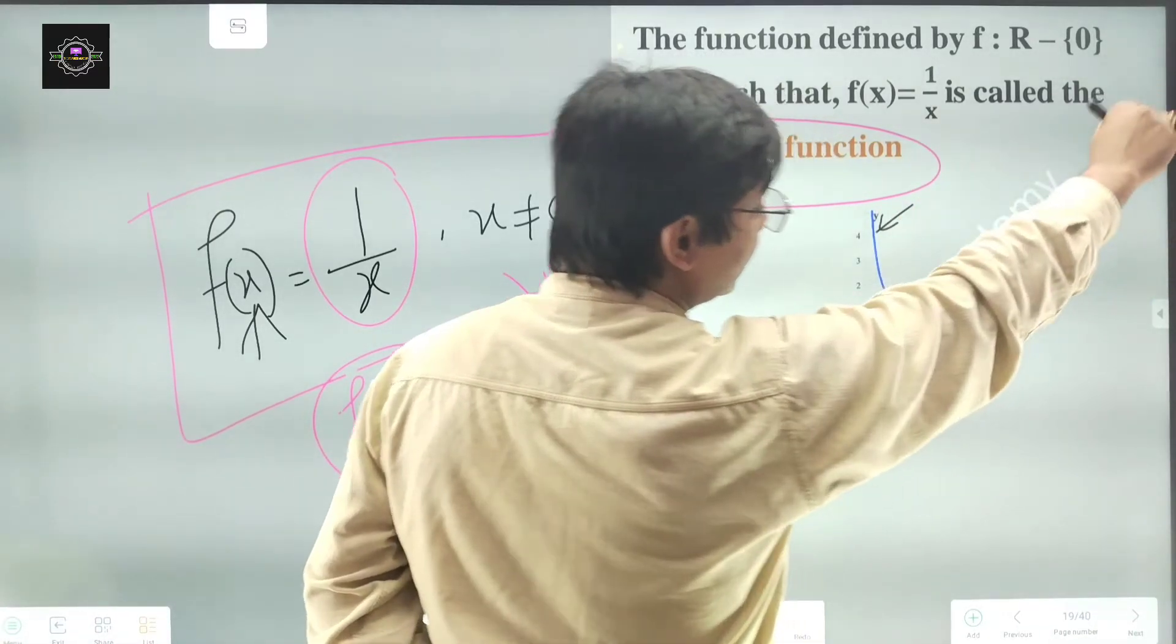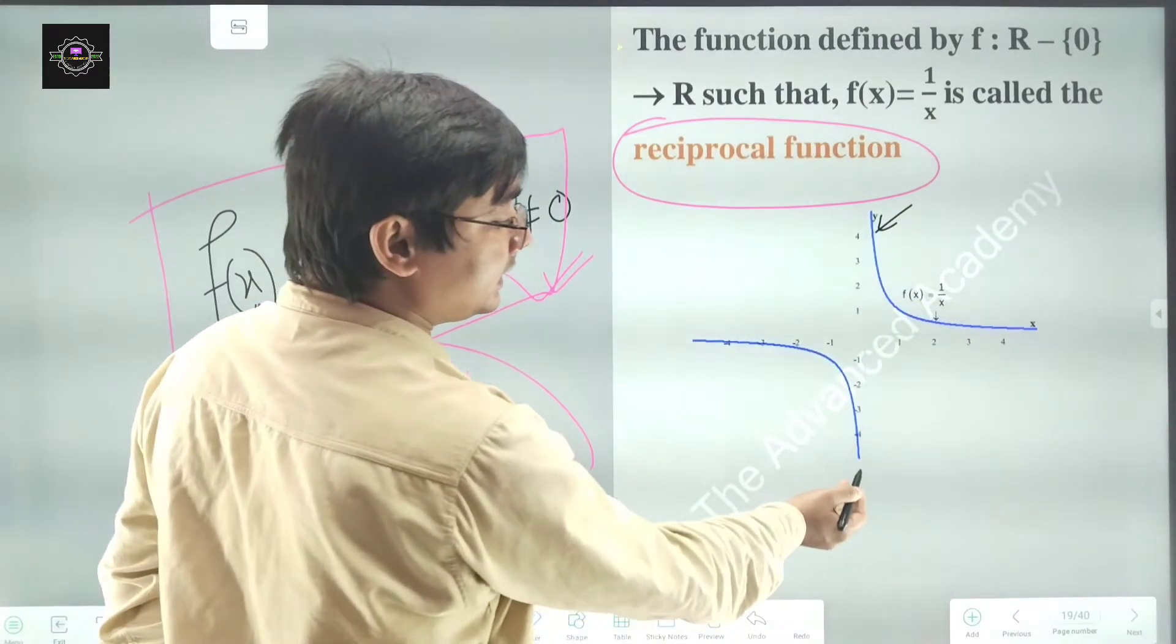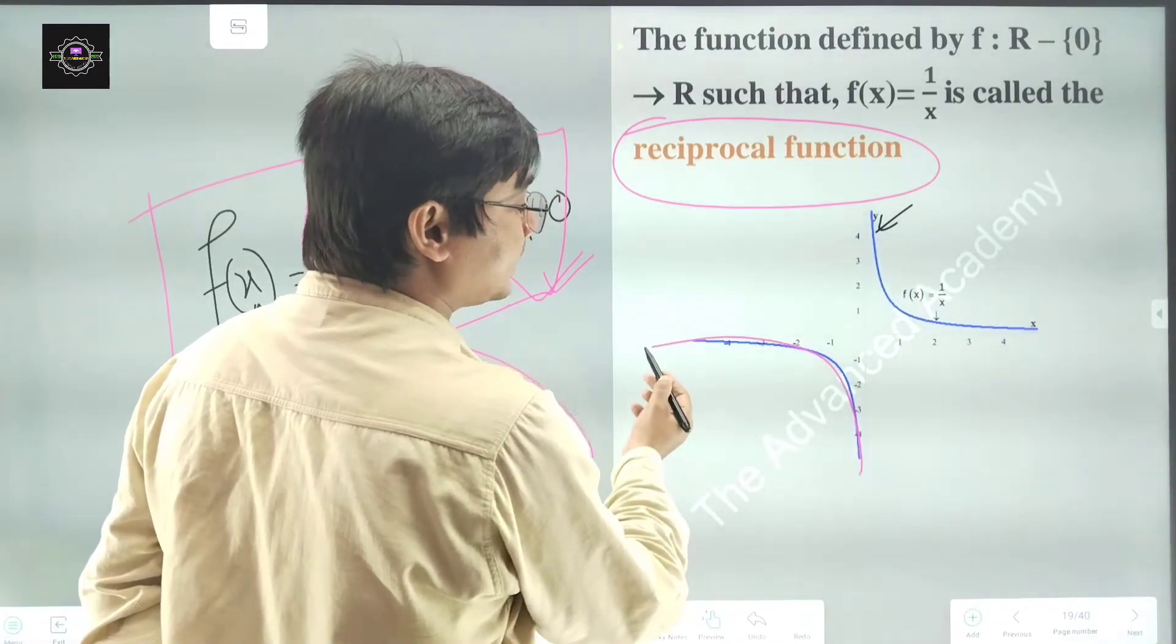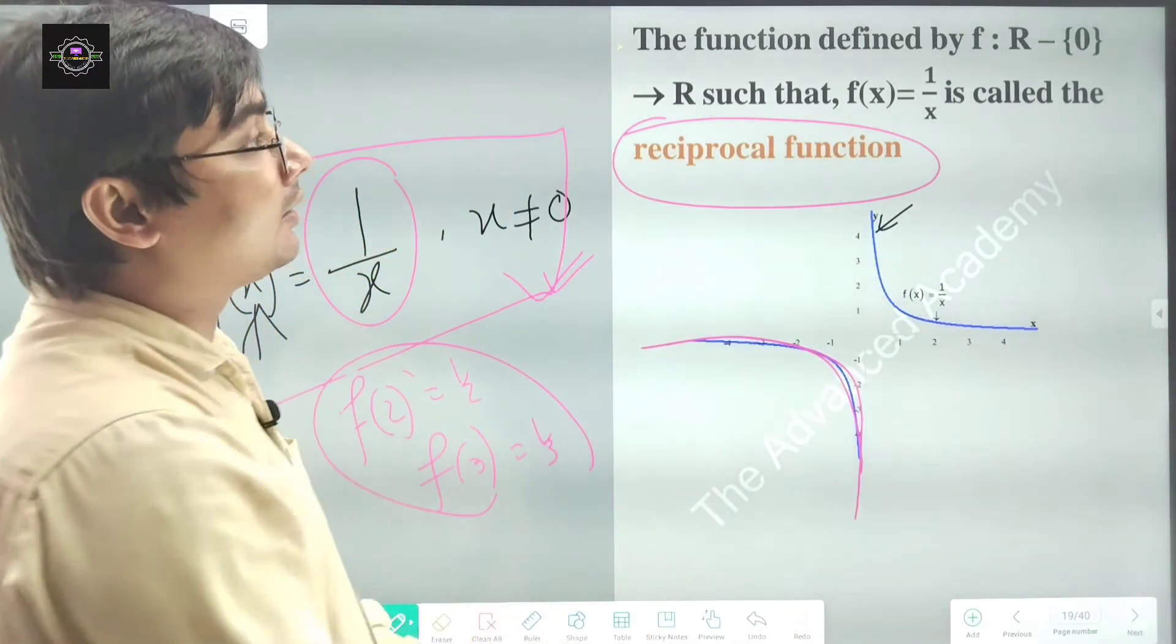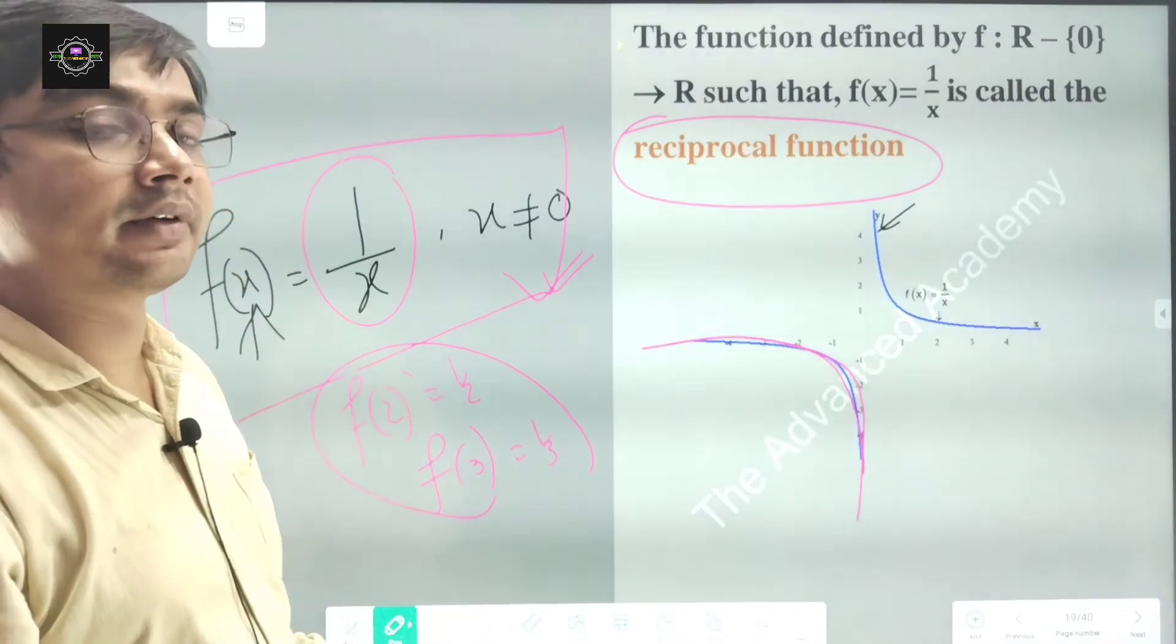This is for any positive value, clear? And in case of negative value of x, you will get this one. This is the graph for the reciprocal function.